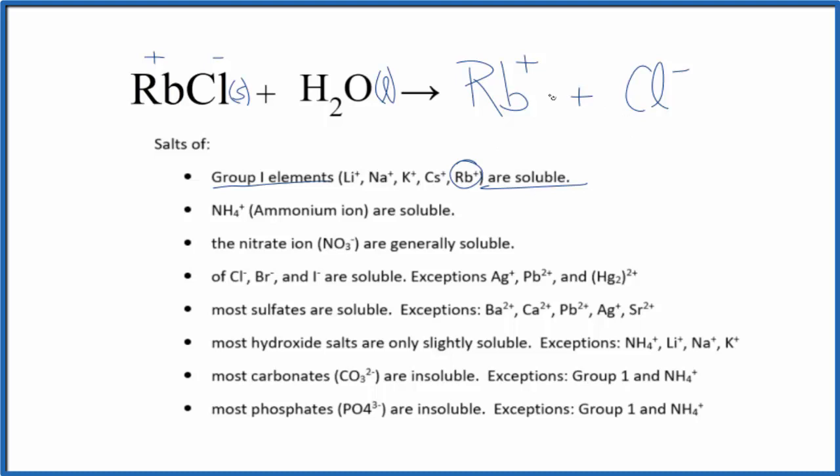Since they're dissolved in water let's put AQ for aqueous after each one of these and this is the equation for RbCl plus H2O. Sometimes you'll see water written above the arrow and sometimes you'll even see water written after the arrow here with the products. Since we've already written aqueous saying that these are dissolved in water I don't usually write water in the products.